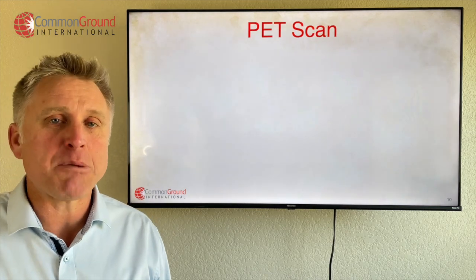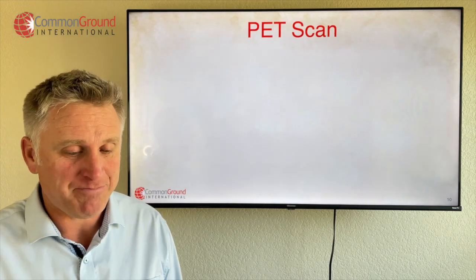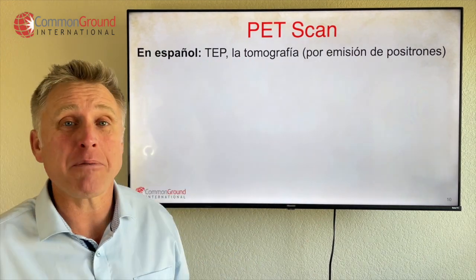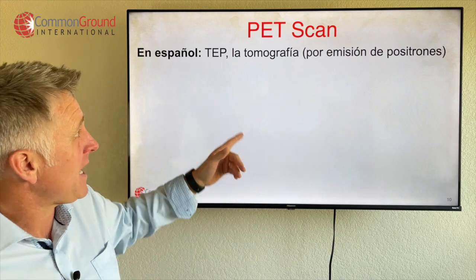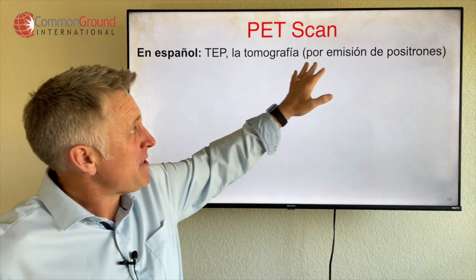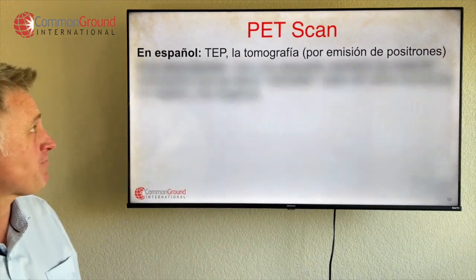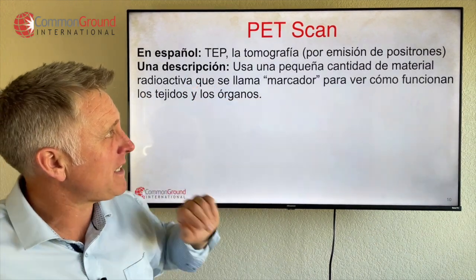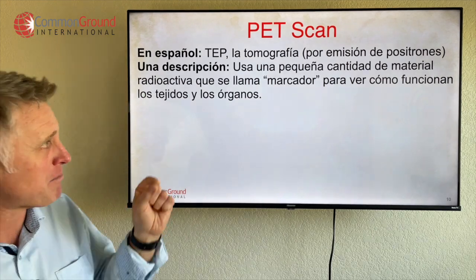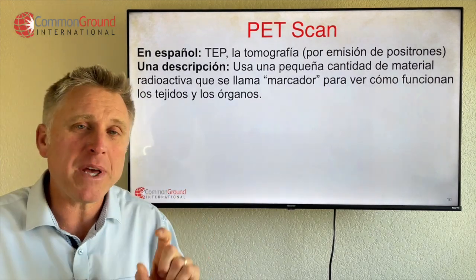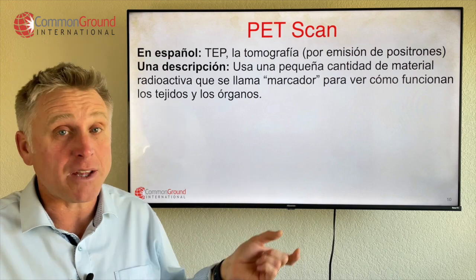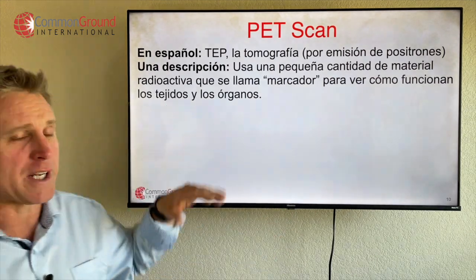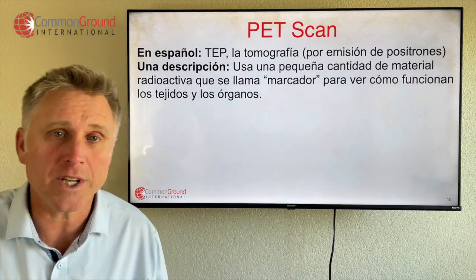Our last scan, the PET scan — ¿cómo se dice? En español es TEP o tomografía. Tomografía por emisión de positrones is probably your most common way to say it. Una descripción: Se usa una pequeña cantidad de material radioactiva que se llama marcador — so it uses a small bit of radioactive material called marcador, or tracer — para ver cómo funcionan los tejidos y los órganos, to see how the tissues and organs are working.